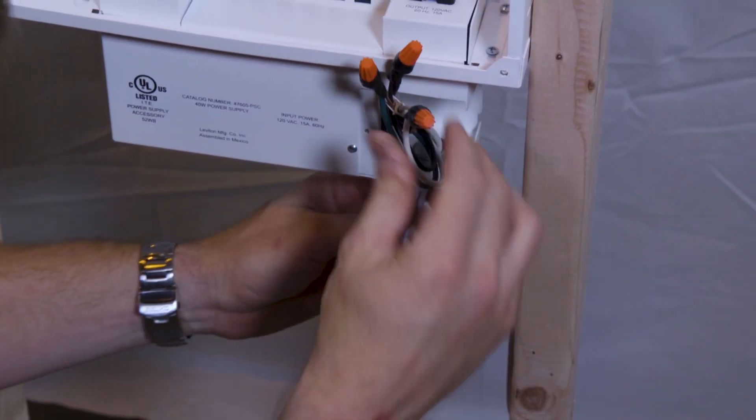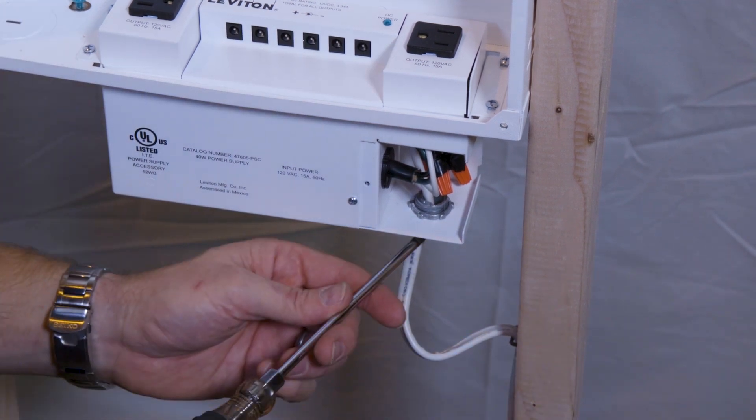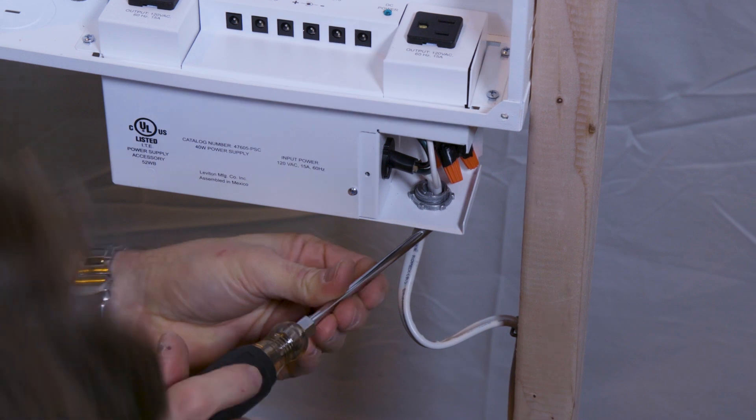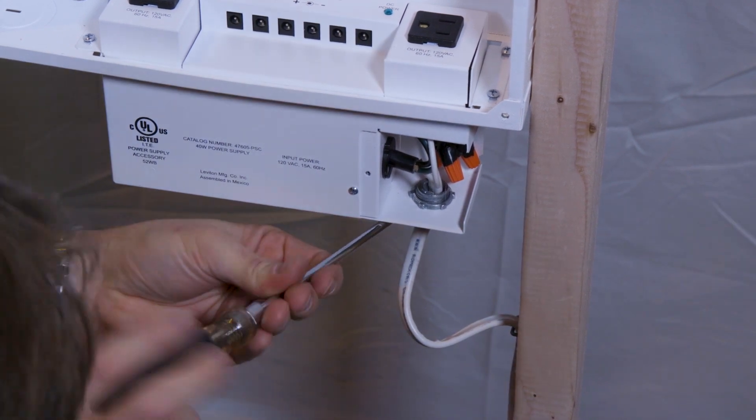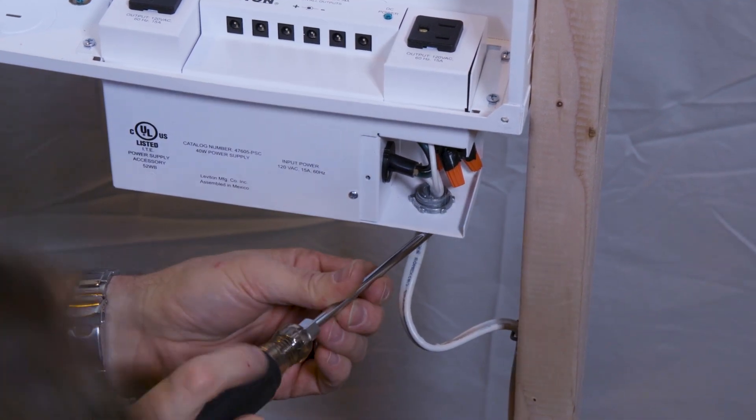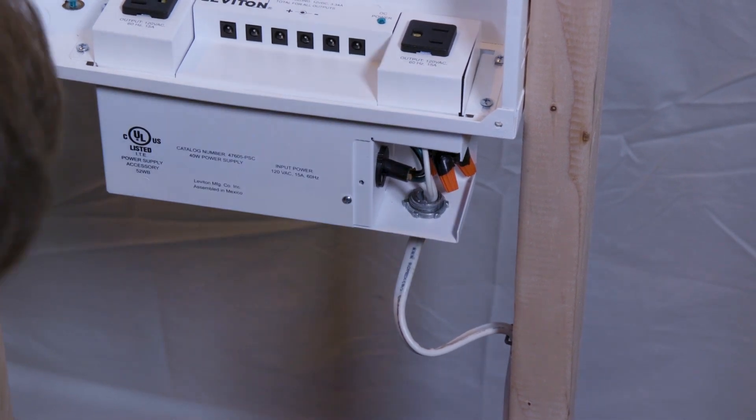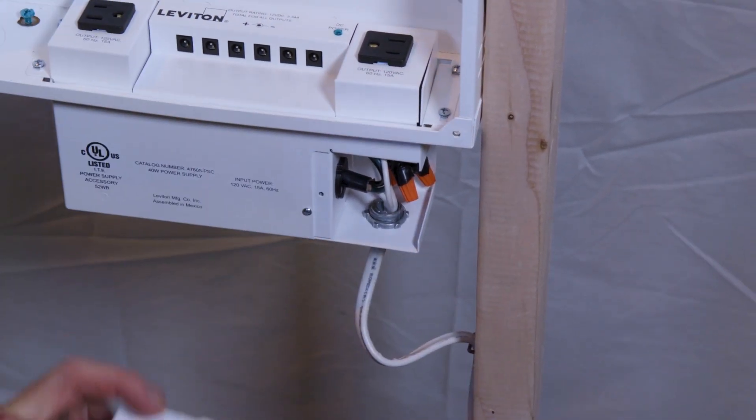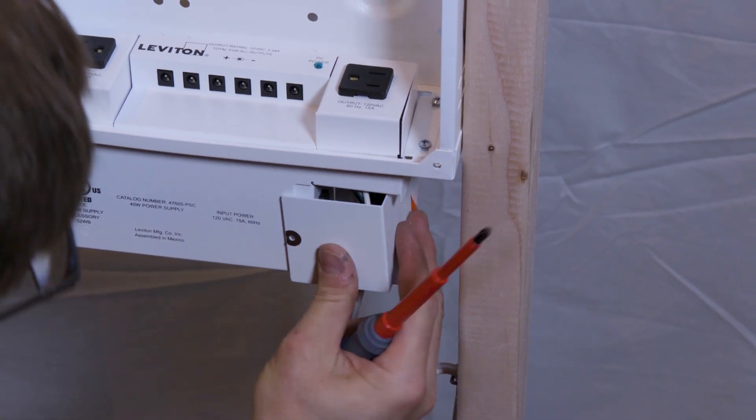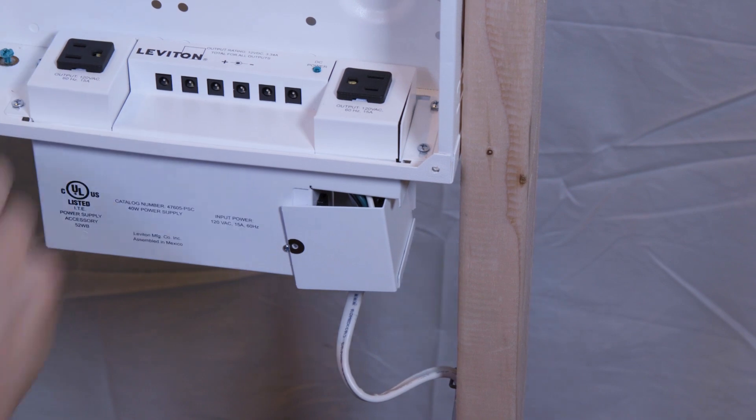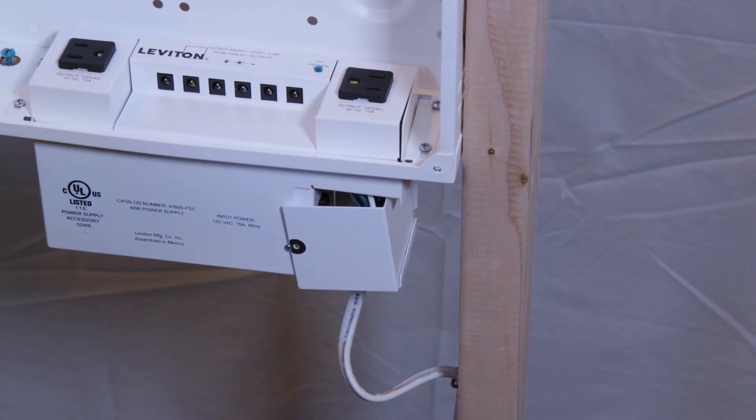I'll tighten up my clamp and we'll replace the cover. Make sure that your power cable is properly secured. Using your small screwdriver and making sure everything is inside the box, reinstall the screw.